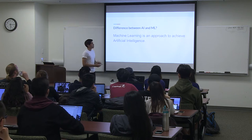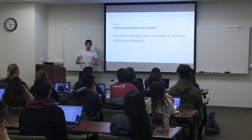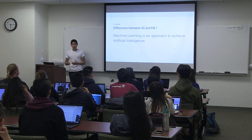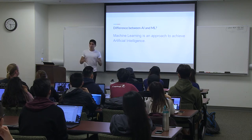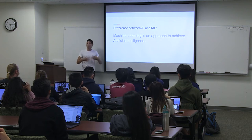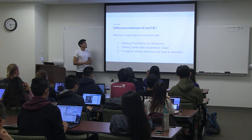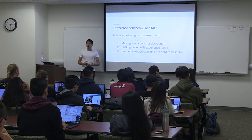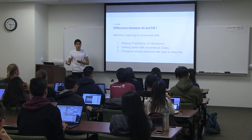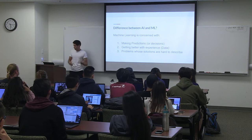What is the difference between AI and machine learning? Machine learning is just an approach to artificial intelligence — think of it as a subfield of AI. A lot of times people tend to use artificial intelligence and machine learning interchangeably, when they're not. Machine learning is concerned with making predictions or decisions, getting better with experience — which is data for computers — and solving problems whose solutions are difficult to describe.